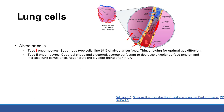Type 2 pneumocytes are cuboidal and clustered, making up only about 3% of the alveolar surface. Their purpose is to secrete surfactant to decrease alveolar surface tension and increase lung compliance. They also regenerate the alveolar lining after injury, serving as precursors to both type 1 and type 2 pneumocytes.